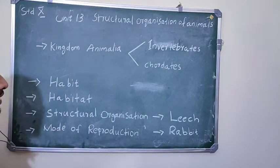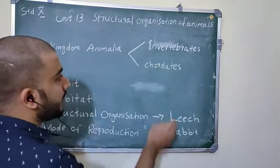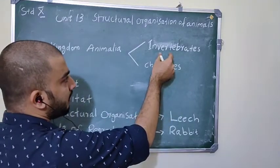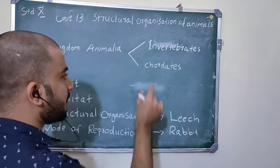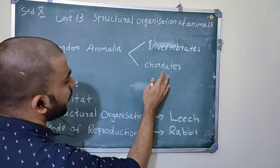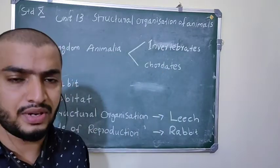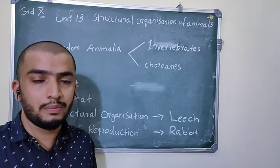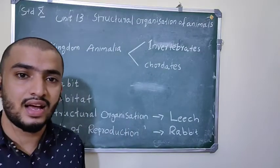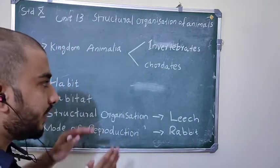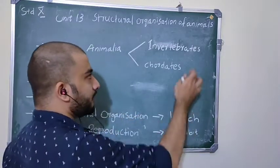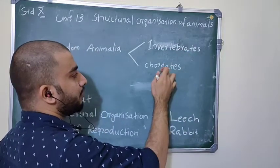Kingdom Animalia is divided into two groups: Invertebrates and Chordates. The difference is simple — Invertebrates have no vertebral column, while Chordates have a vertebral column. In this chapter, we will discuss leech, which comes from Invertebrates, and rabbit, which comes from Chordates.